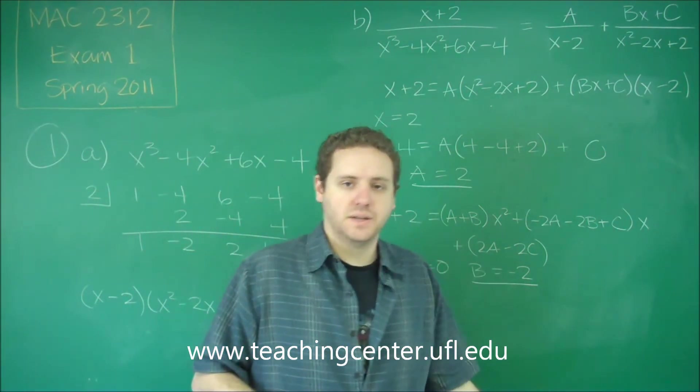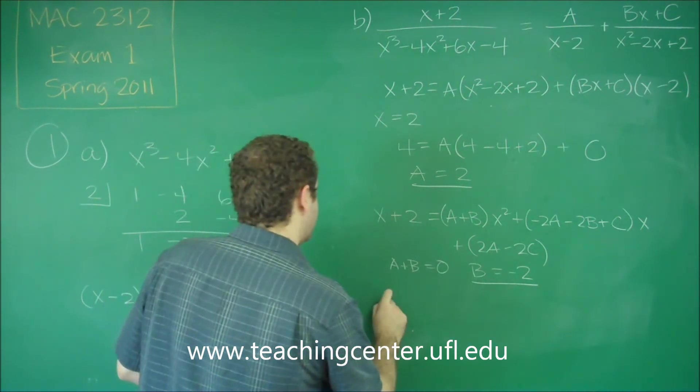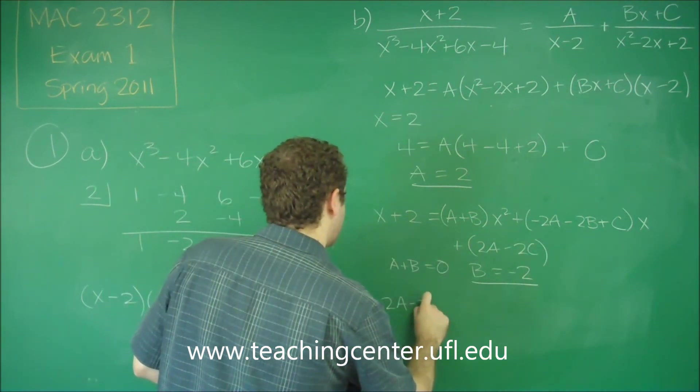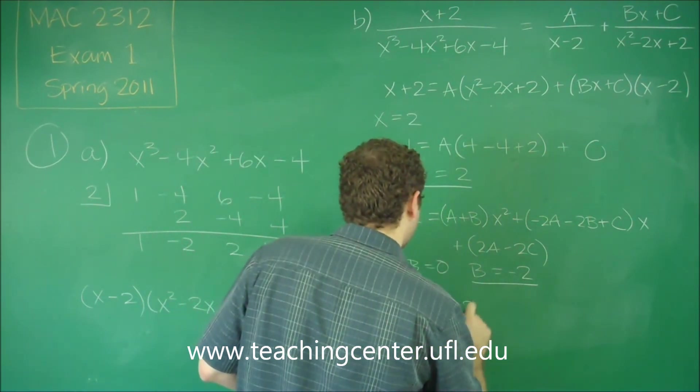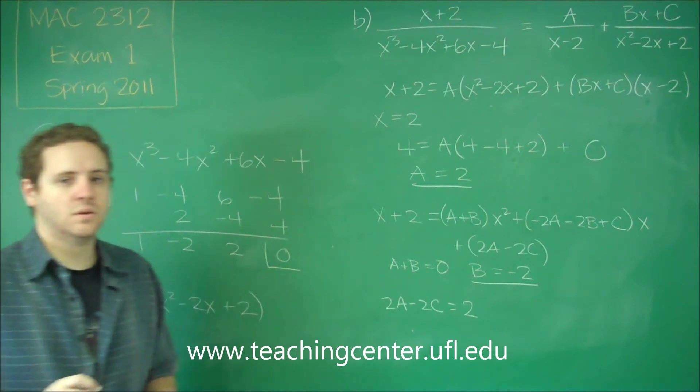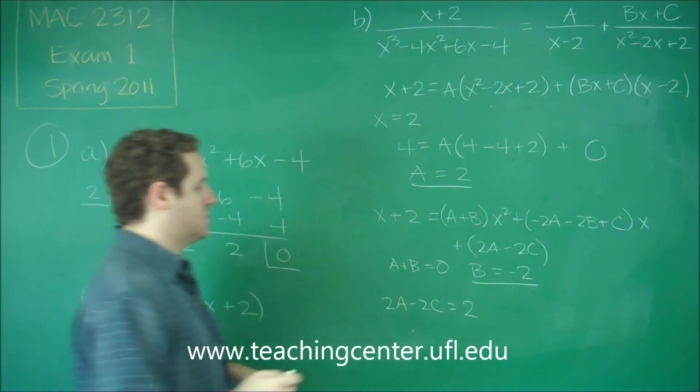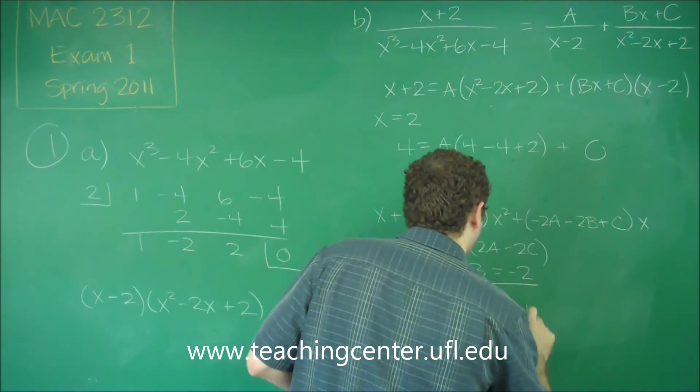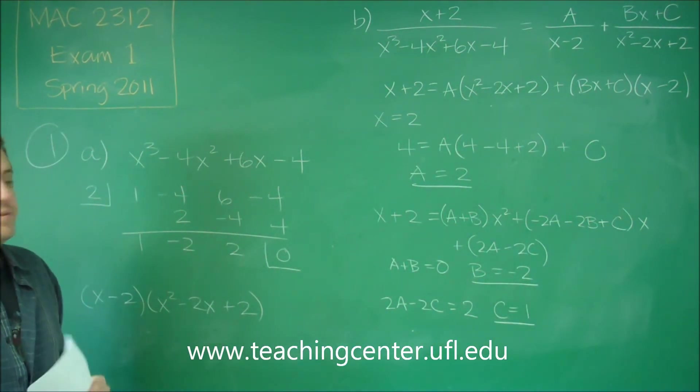And you can see here, we have 2, so we can certainly get the third one. Easiest one would be the constant. So we know that the total constant term, 2A minus 2C, has to equal the constant term over here, which is 2. Since we already know A equals 2, we get 4 minus 2C equals 2, that tells you that C is equal to 1.